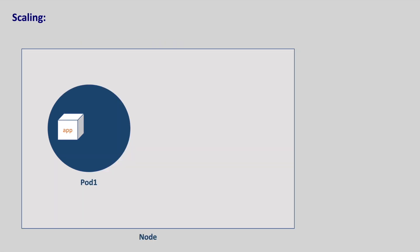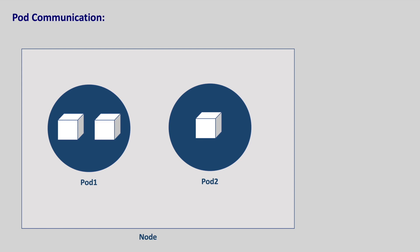If we want to scale our application when the load increases, we should increase the number of pods, not the number of containers in the same pod. When pods are created, each pod is assigned a unique IP address and range of ports. Every container in a pod shares the network space including the IP address and ports. Inside a pod, containers can communicate with each other using localhost. Containers in different pods use IP addresses to communicate.